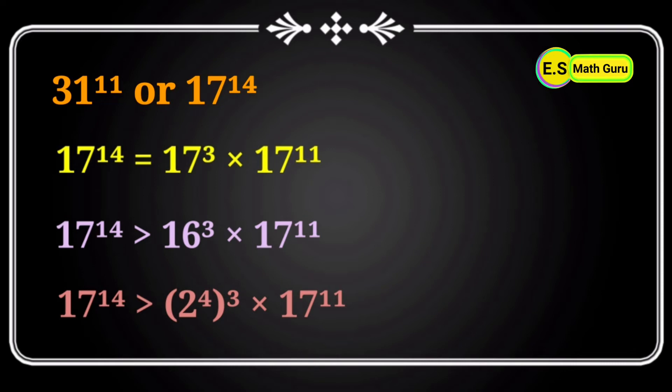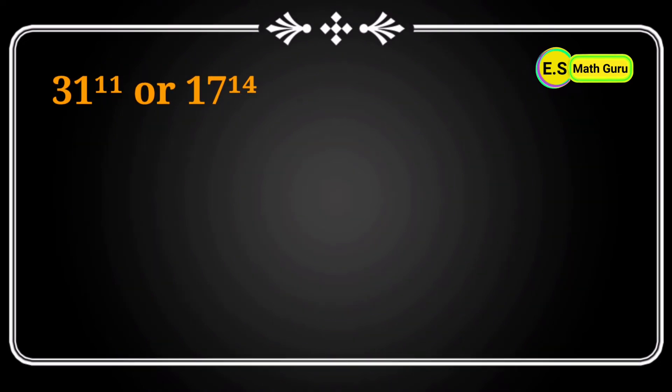Now we need to apply one of the laws of exponents to simplify it. That is, (a^m)^n equals a^(m×n). By applying it, we get 2^12 because (2^4)^3 equals 2^12.